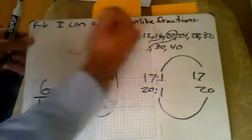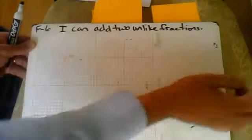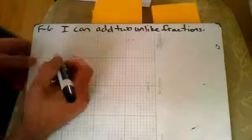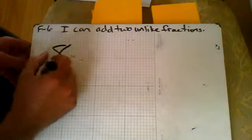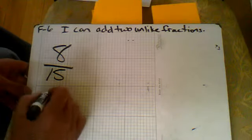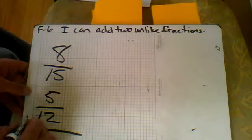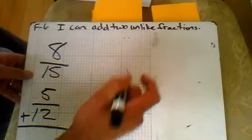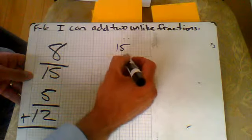Get my handy-dandy eraser out here. Let's move to the second problem. We have 8/15 plus 5/12. The denominators are not the same, so first thing we're going to do is come over here: 15 and 12.